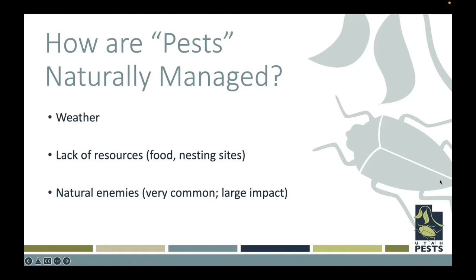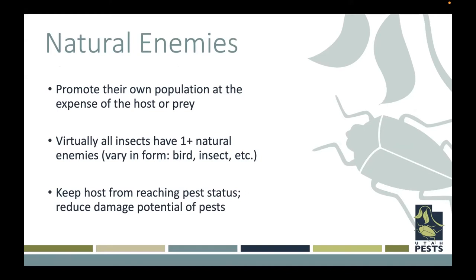A natural enemy is essentially an organism that promotes their own population at the expense of their host or prey species. Virtually all insects have at least one natural enemy. You can think of birds that tend to be generalist predators — if they're insectivores, it doesn't really matter what insect they eat. Insect natural enemies are also very abundant. If we think of parasitoid wasps, there are hundreds of thousands of species of wasps, most of which tend to be parasites and natural enemies of some insect. These are hopefully going to keep that pest from reaching pest status.